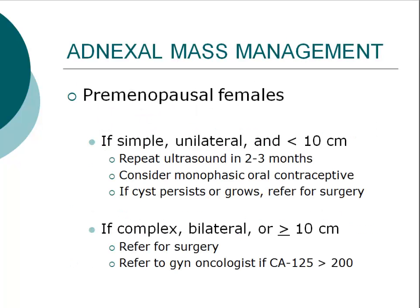After taking the patient's history, performing a physical examination, ordering a pelvic ultrasound, and possibly other lab work, the next step is to determine appropriate management. If a woman is premenopausal, the chance that the adnexal mass is cancer is low. If the mass is simple, found only on one side, and measures less than 10 cm, follow the recommendations listed. If the mass is complex with solid and cystic parts, found on both ovaries, or greater than 10 cm in size, refer for surgery.